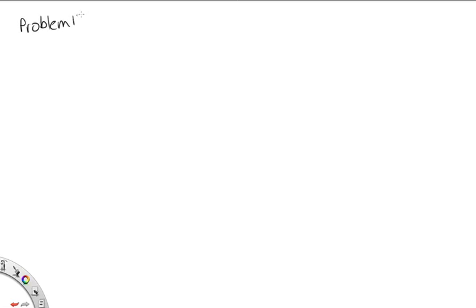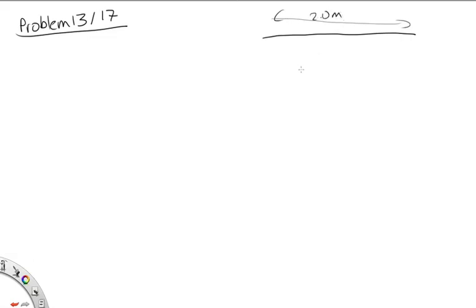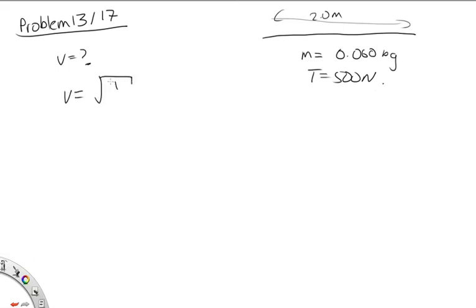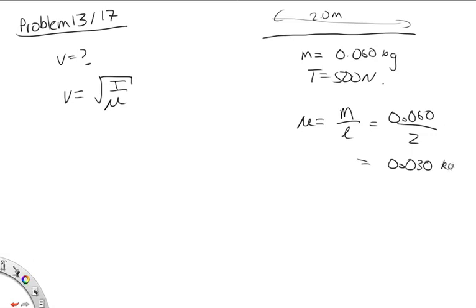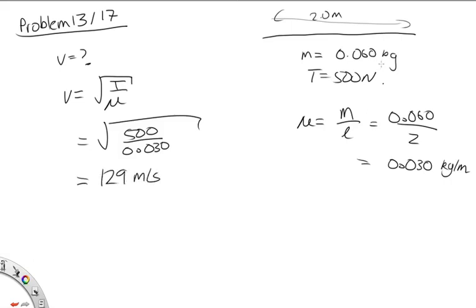Problem 13 for 1121, or 17 for 1131. We have a rope of length 2.0 metres, mass 0.060 kilograms, with a tension of 500 newtons. The wave velocity equals the square root of tension over mass per unit length. The mass per unit length is 0.060 divided by 2.0, which is 0.030 kilograms per metre. So v equals the square root of 500 over 0.030, giving approximately 129 metres per second, or 130 metres per second to two significant figures.